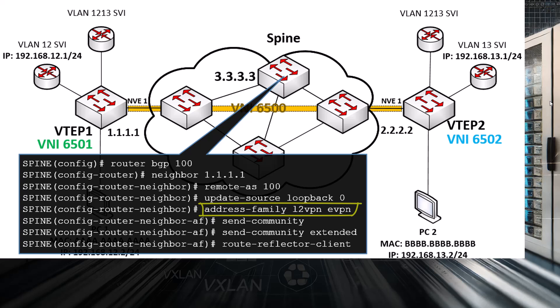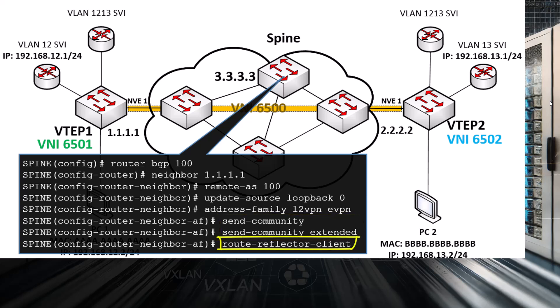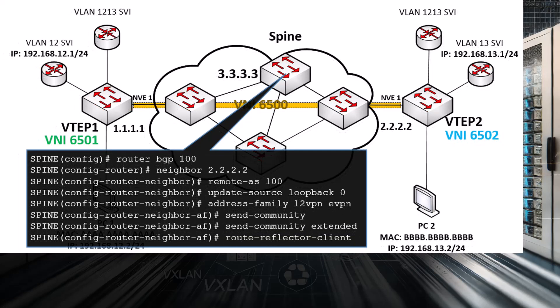To make this work, we have to enable BGP extended communities, and we also have to configure our VTEP1 neighbor as a route reflector client. We configure exactly the same thing for the spine's IBGP peering with VTEP2 — the configs are exactly the same except for the neighbor IP address. So far, for either Layer 2 or Layer 3, our configuration of the spine and the underlay network is exactly the same.